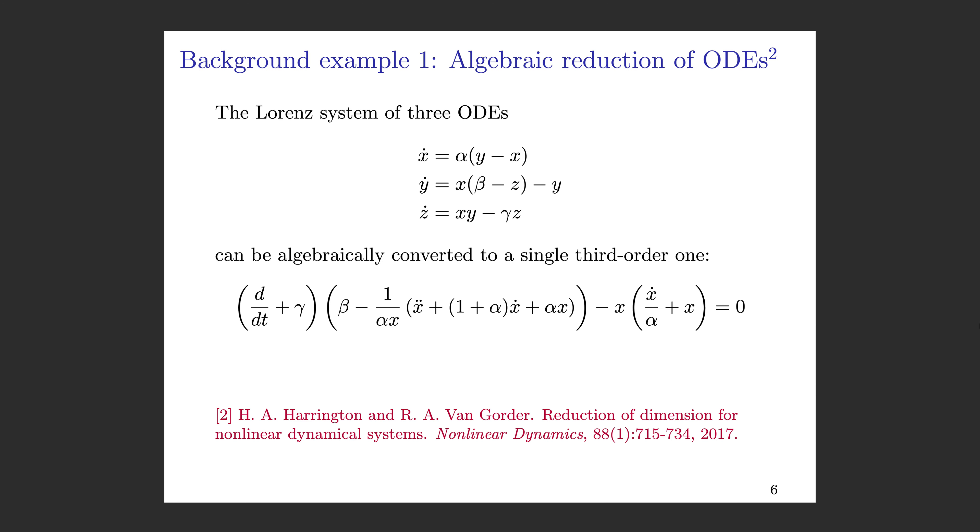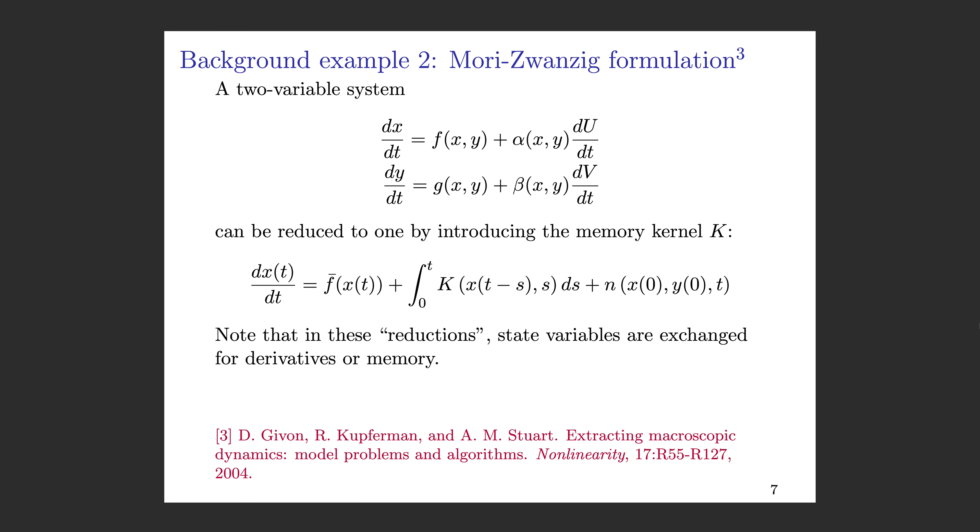Before I start, I want to give a couple background examples that helped motivate this work. The first example is about algebraic reduction or conversion of ODEs, taken from a paper by Harrington and Van Gorder in Nonlinear Dynamics. In this example, we start with a Lorenz system of three ODEs, and they show how this system can be algebraically converted to a single third-order differential equation. This is an exact transformation, but we've introduced higher derivatives on x, actually going up to the third derivative.